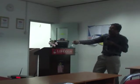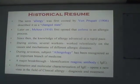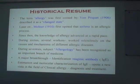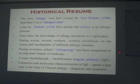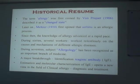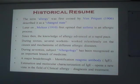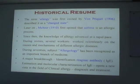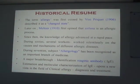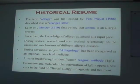During the 1960s, several workers throughout the globe worked closely on the causes and mechanisms of different allergic reactions or diseases. During the 70s, the subject of allergy was recognized as an important branch of medicine. A major breakthrough occurred after the identification of the peculiar type of antibody known as the rheogenic antibody, or IgE antibody.